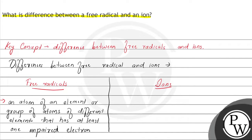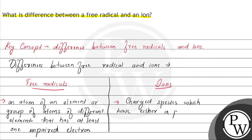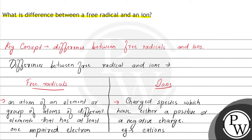On the other hand, ions jo hote hain, they are charged species which have either a positive or a negative charge. Positive charge wale ko hum cations bolte hain, aur jinn ke paas negative charge hota hai, unhe hum anions bolte hain.